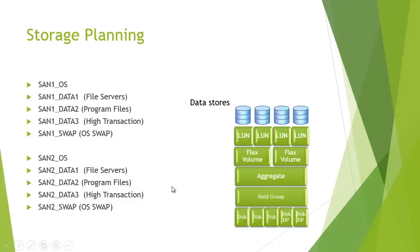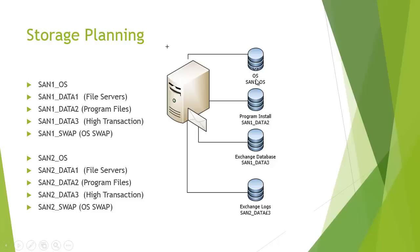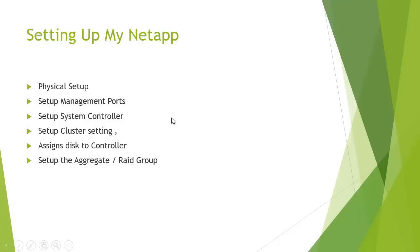Ultimately we don't really care if we lose swap files in a disaster recovery scenario. As I explained, this is what a typical layout would look like for an Exchange guest: I would put the OS on SAN 1 OS, program files on SAN 1 Data 2, the Exchange database on SAN 1 Data 3, and — there's a typo there — the logs on SAN 2 Data 3.